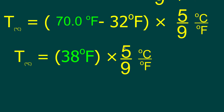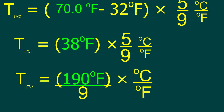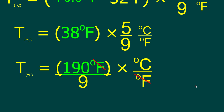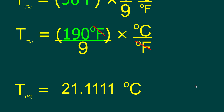So we do 38 times 5, multiplying the numerators, and leave the 9 on the bottom. That gives us 190 Fahrenheit over 9. We've got degrees Fahrenheit on the top and degrees Fahrenheit on the bottom, so those simply disappear. Our calculation is now 190 divided by 9, and the only unit left is degrees Celsius. We punch that into a calculator: 190 divided by 9 is 21.1111, and all we have is degrees Celsius.